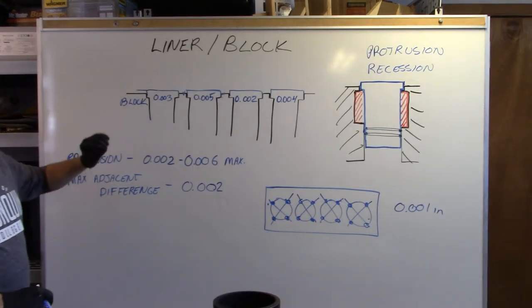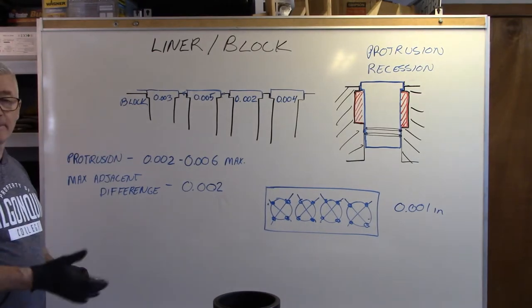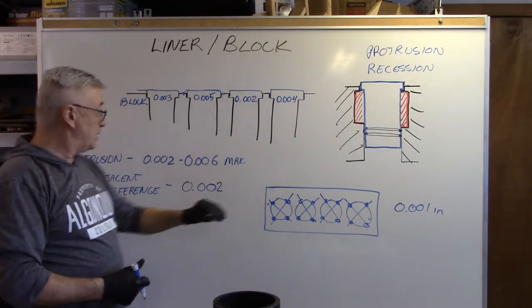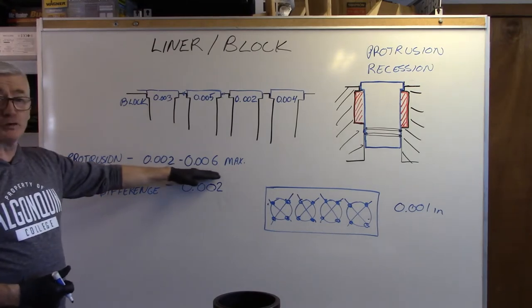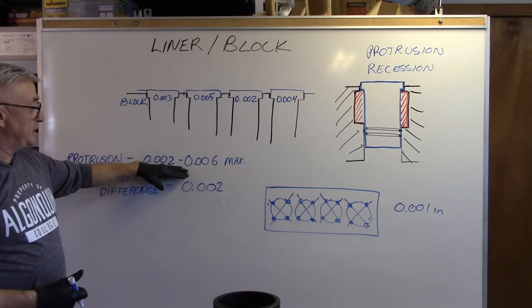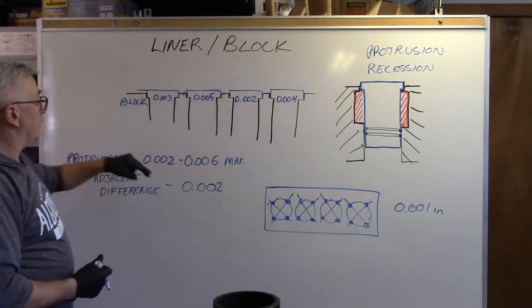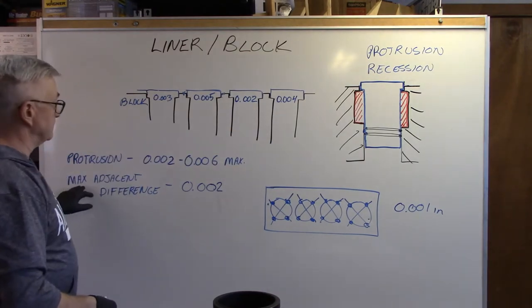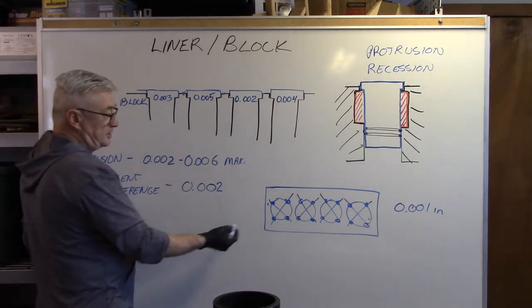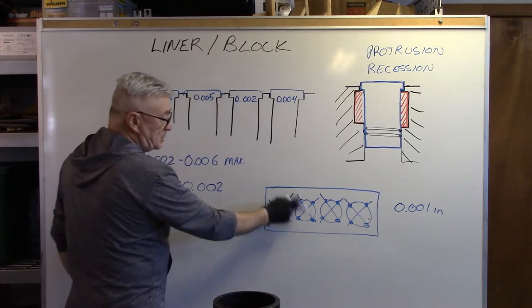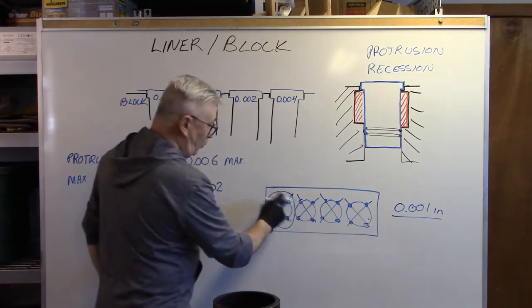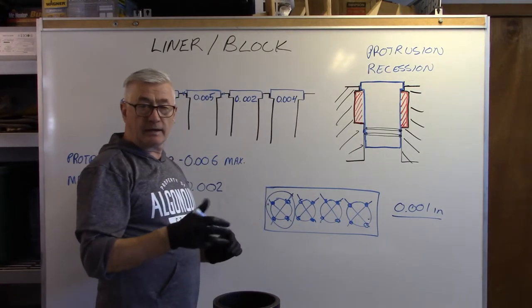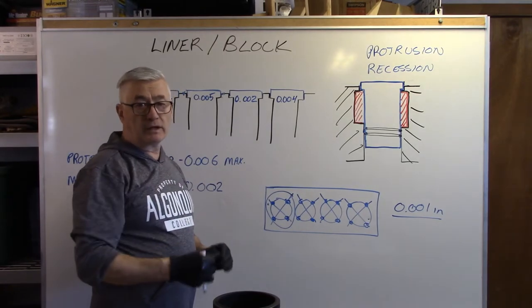We are going to look now at liner protrusion and measurements and specs when we are setting up a liner in a block. And again, I have only drawn out four cylinders here, but in any engine, you will look at your spec and it will give you usually a range on what your protrusion should be. I have set this one up and said that it is somewhere between two and six thou is my maximum protrusion spec. So I have also gone in and drawn out four numbers on this so that we can see how this is going to work. The max, and that is very fine, but when you are measuring these protrusions, you should measure it on each cylinder in four positions. And for each cylinder, the maximum difference from any of these four measurements should only be one thou.